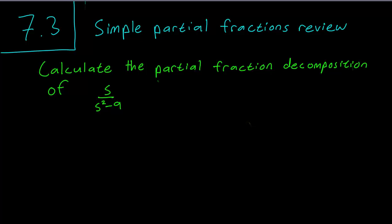The first thing to do is to always factor the denominator. And often you have to use the quadratic formula to do this, but in this case it's pretty easy because it's a difference of two squares. So we factor the denominator as s plus 3, s minus 3.